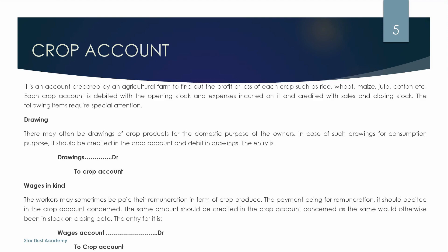Second, wages in kind. Workers may sometimes be paid their remuneration in the form of crop produce. The payment being for remuneration, it should be debited in the crop account concerned as wages. The same amount should also be credited in the crop account as it would otherwise be included in closing stock.